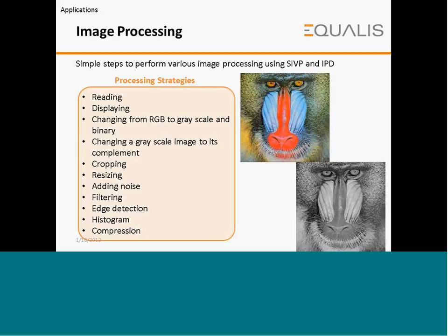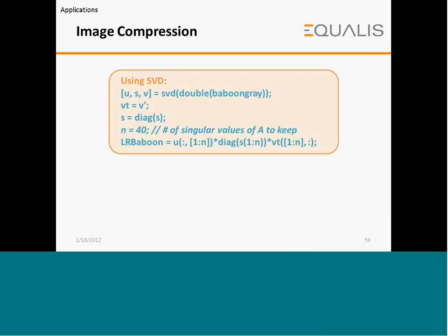Image processing: We can perform various image processing actions using the image and video processing toolboxes through simple steps in SciLab. Processing strategies include reading images, displaying, changing from RGB to grayscale and binary, changing a grayscale image to its complement, cropping, resizing, adding noise, filtering, edge detection, histogram, and compression. An example demonstrates image compression using the singular value decomposition (SVD) function in the image processing toolbox with different singular values.